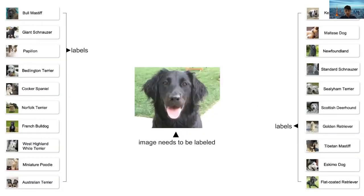This is our proposed interface. The center shows the image that needs to be labeled, and the two sides display the labels. The user needs to select an appropriate label from the two-side label list and assign it to the image.